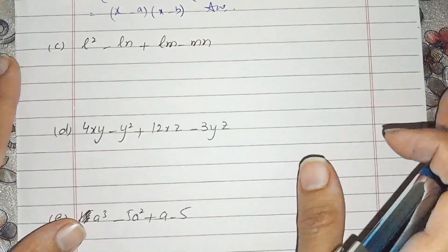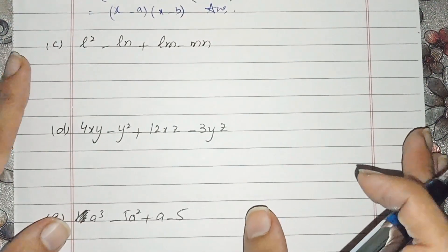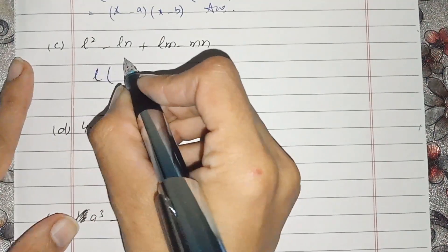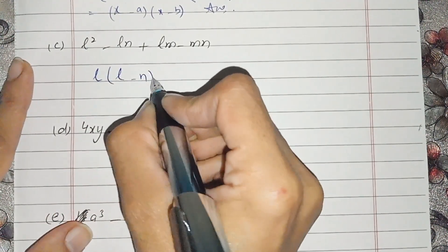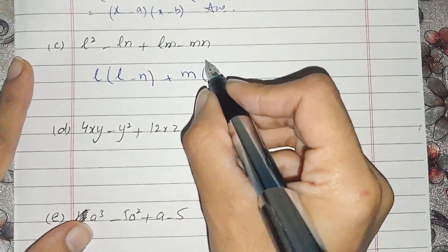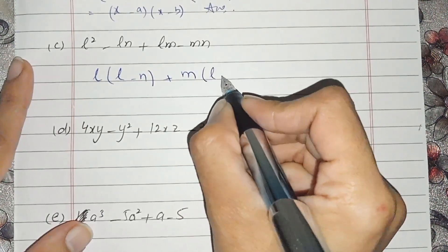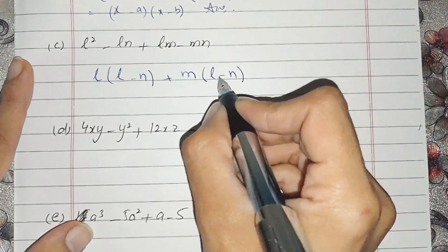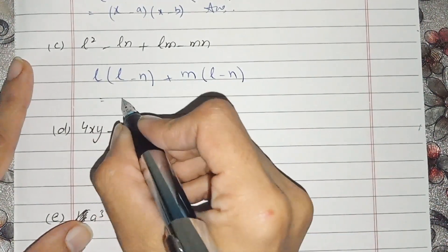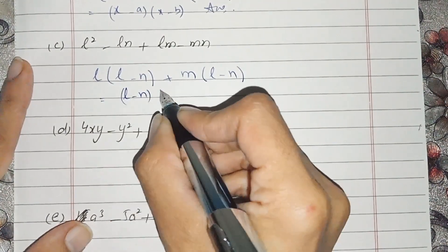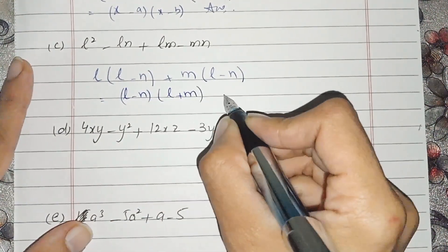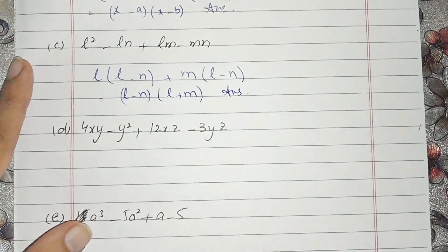Now c part. In c part, L is common in the first two terms, and left is L minus N. Here M is common in the next two terms, and left is L minus N. Now L minus N is common in both groups. We take it out and left is L plus M. This is the answer of c part.